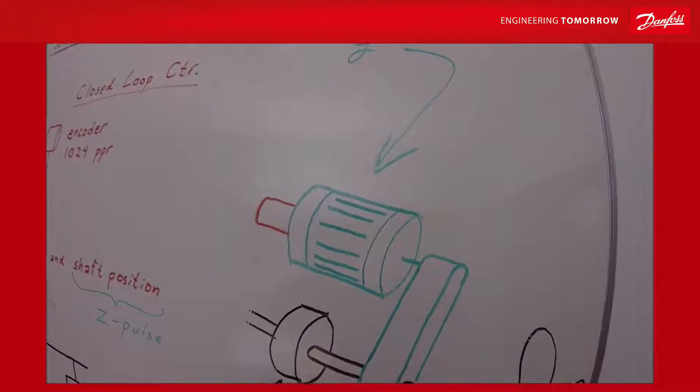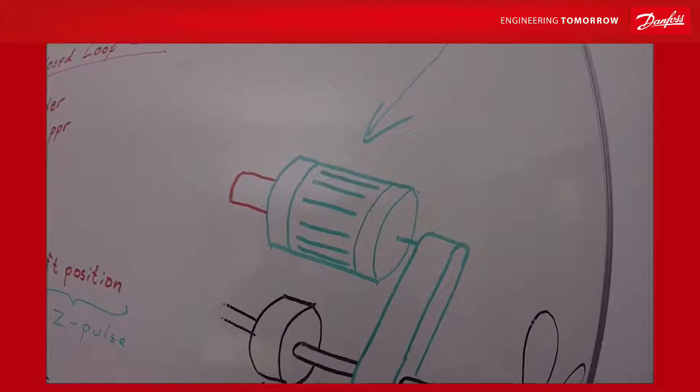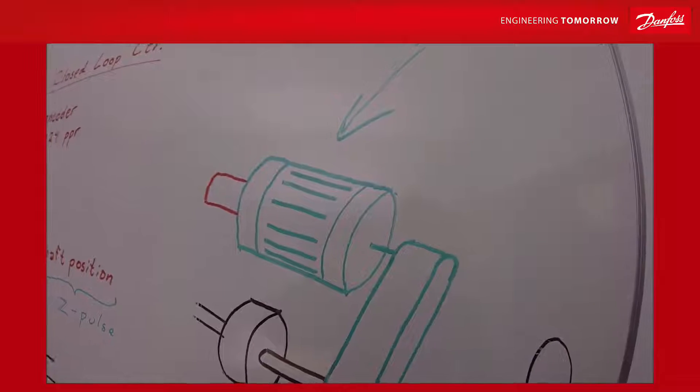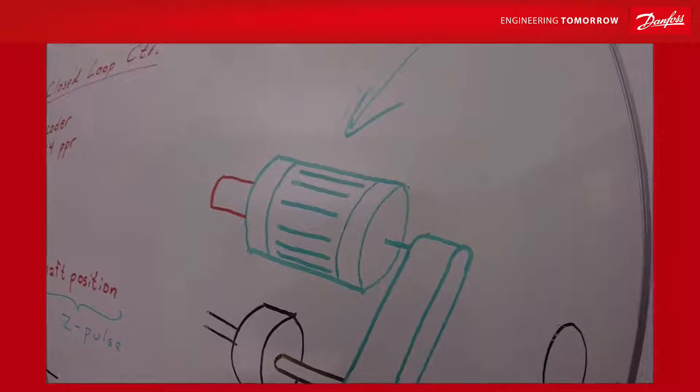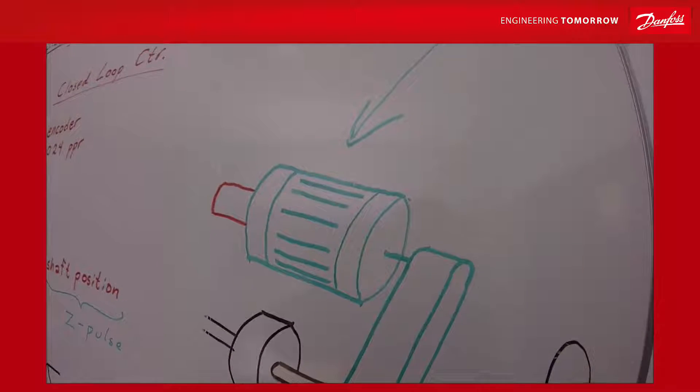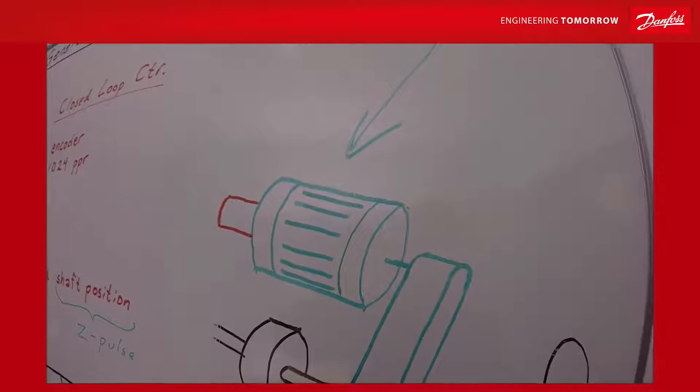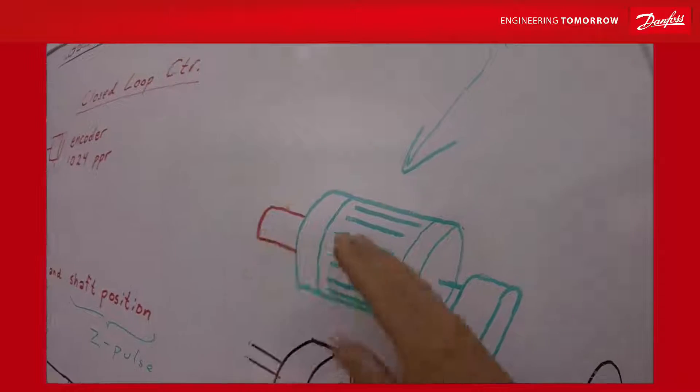Generators used on shaft generators could be anything from asynchronous induction motors but for most parts it's some kind of synchronous machine. It could be a permanent magnet motor or it could be a generator with external excitation.